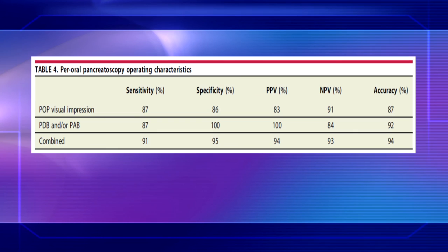The sensitivity and specificity for POP visual impression alone were 87% and 86%, respectively. Those for the biopsies were 87% sensitivity and 100% specificity. When combined together, the POP visual impression with PDB and PAB, the sensitivity increased to 91%, the specificity to 95%, and the accuracy was close to 94%.